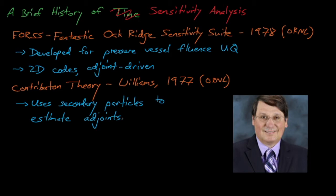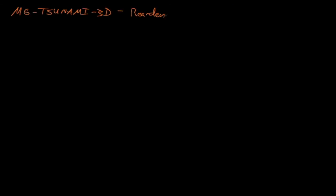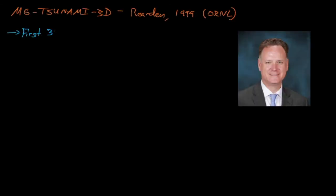The Contributon method was eventually implemented in a Monte Carlo code, but advancements by Riordan in 1999 provided a more straightforward way of estimating adjoints. Riordan's multi-group Tsunami code provided the first means for estimating sensitivity coefficients in 3D Monte Carlo simulations, and Tsunami really opened the door for sensitivity analysis in the criticality safety community.